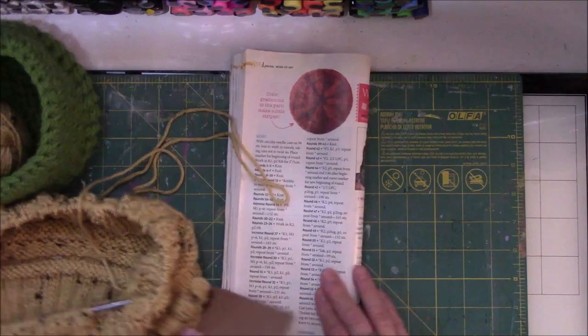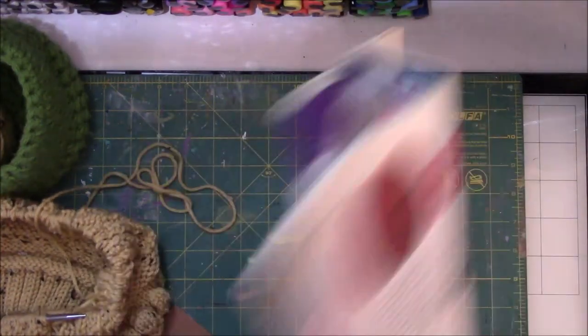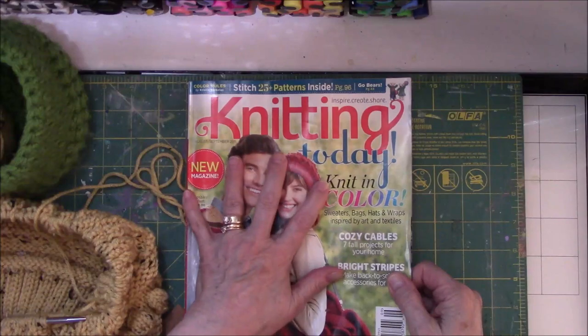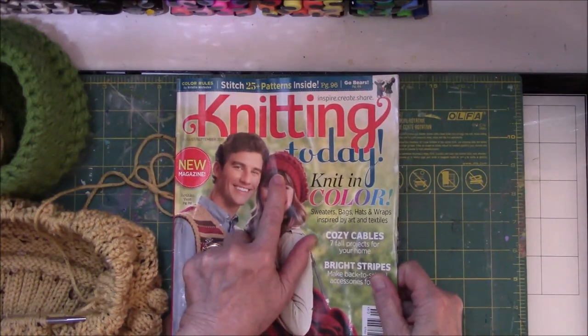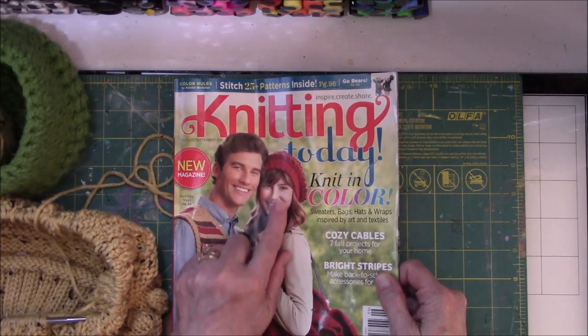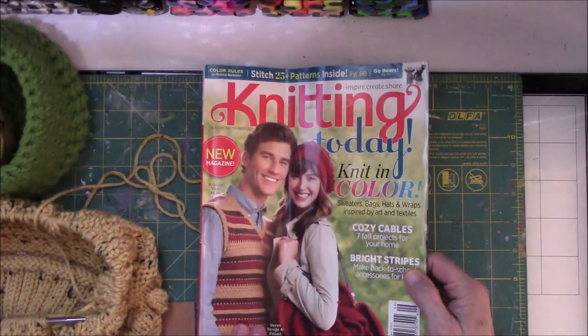While digging through a bin that had old unfinished projects in it, UFOs, I found this magazine from 2011 called Knitting Today. And right on the cover, there is a knit beret or some kind of a knit hat. They're calling it beret. And I thought, wow, that would be really cool. So I opened it up to find the directions.